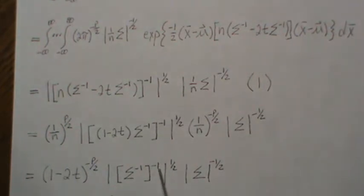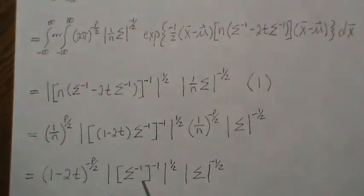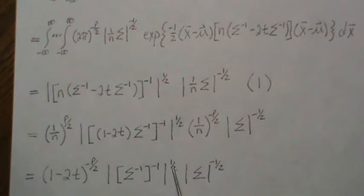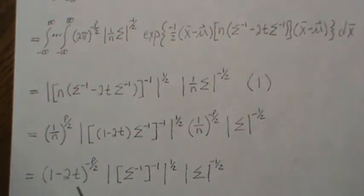What's left is sigma inverse inverse to the determinant to the one-half, and this is the other piece. Sigma inverse inverse is just sigma. So it's the determinant of sigma to the one-half times the determinant of sigma to the minus one-half — we add exponents, that goes to zero, which makes it go to one. So we're left with just the simplified expression.